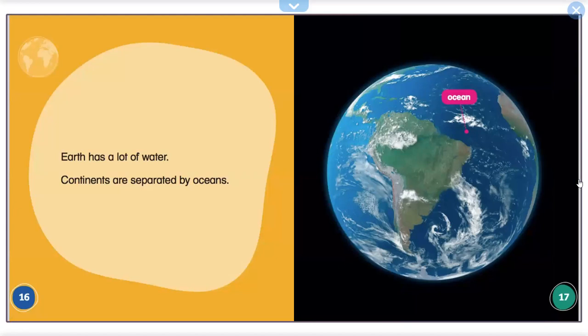Earth has a lot of water. Continents are separated by ocean.